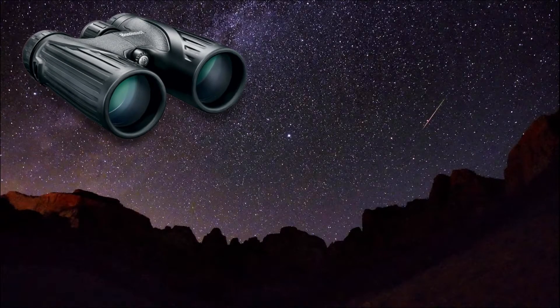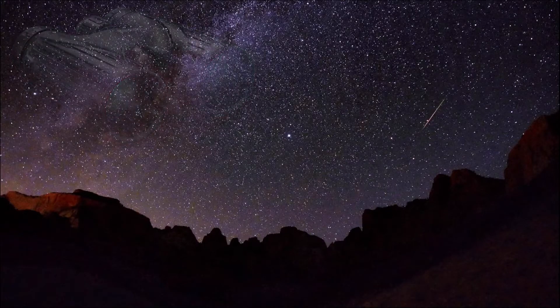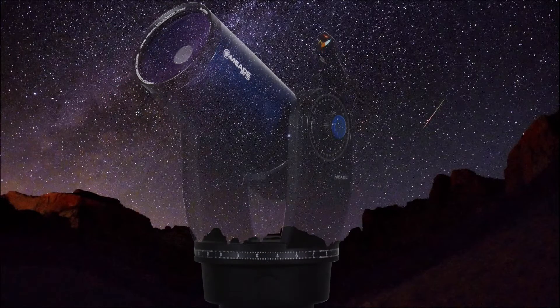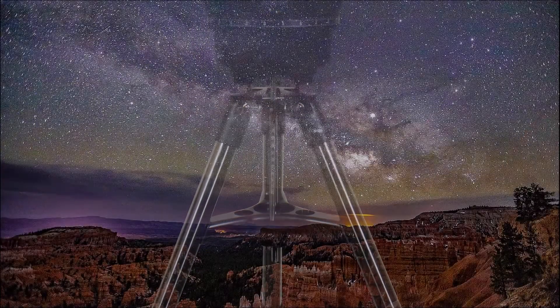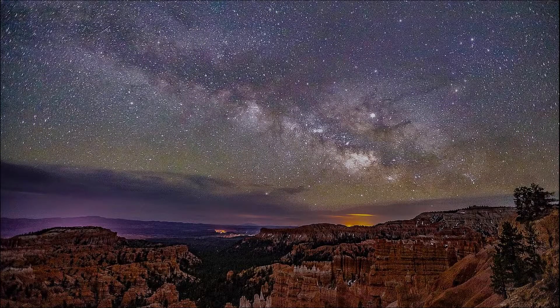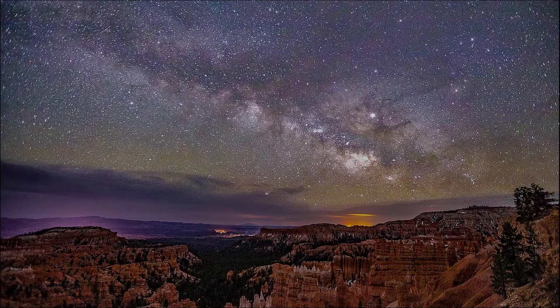With a good set of binoculars we can see down to the tenth magnitude of the dimmest stars. Larger telescopes can help us see stars of even dimmer magnitudes, down to the fourteenth or fifteenth magnitude in a good dark night sky like the one seen here over Bryce Canyon National Park in Utah.